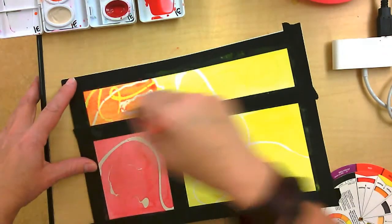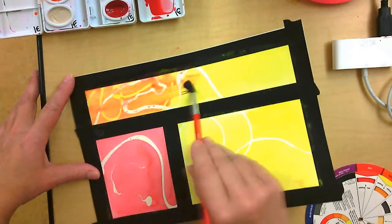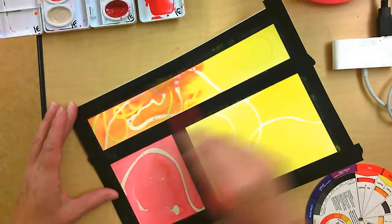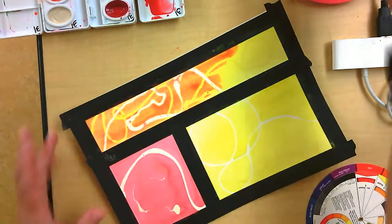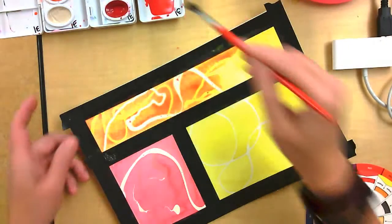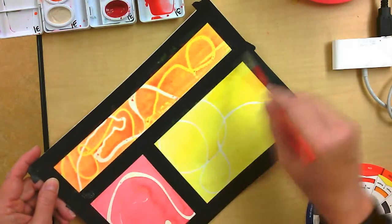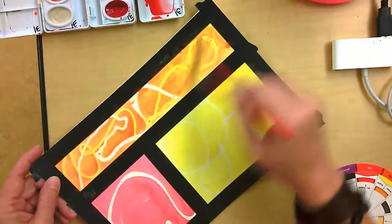The cool thing about watercolor is the more water you add, the thinner the layer and the more it'll blend with the color underneath because watercolor is transparent and gets rehydrated by water. So I can make that yellow paint blend in a little bit better.